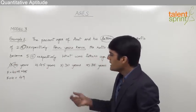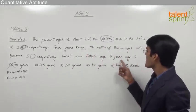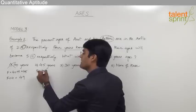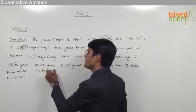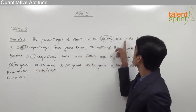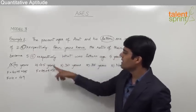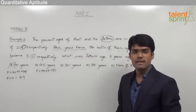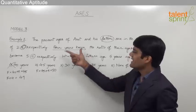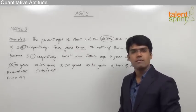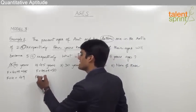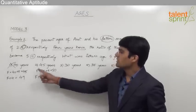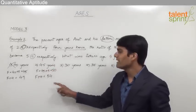For option two, father's age 5 years ago is 45, so father's present age is 45 plus 5 equals 50. Since 50 is a multiple of 5, the first condition is satisfied. For the second condition, father's age four years hence will be 50 plus 4 equals 54, and 54 is not a multiple of 11, so option two is also wrong.